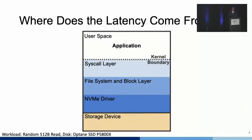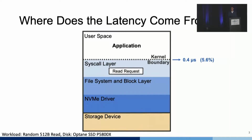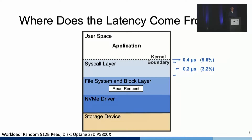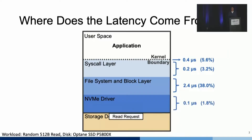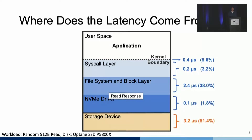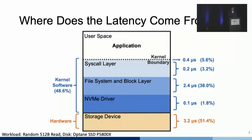So what is the kernel software overhead? Looking at the data path of one typical read request: when the application submits a read request, it first needs to cross the kernel boundary and reach the syscall layer. After that, the read request will be sent to the file system and the block layer, and is then forwarded to the NVMe driver. The NVMe driver then sends the request to the storage device. Once completed, the response is returned to user space in reverse order. The percentage of time spent in the storage device represents hardware overhead, and the rest is kernel software overhead.